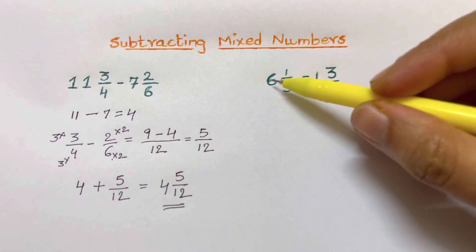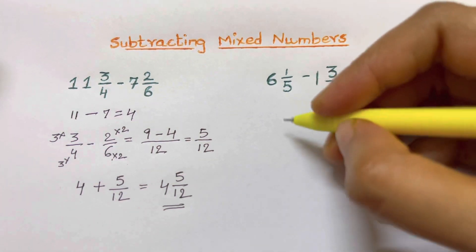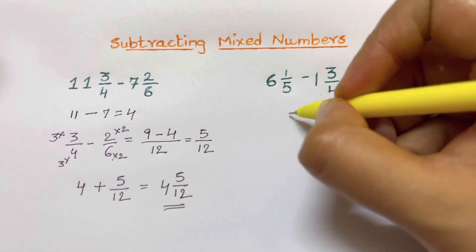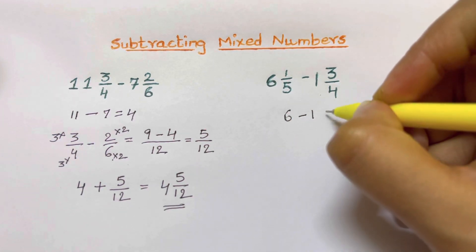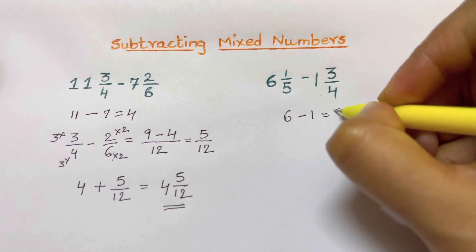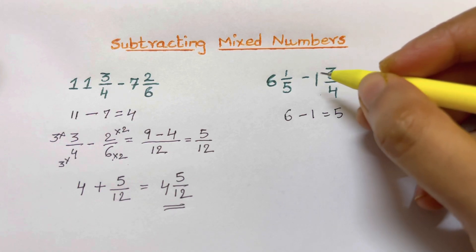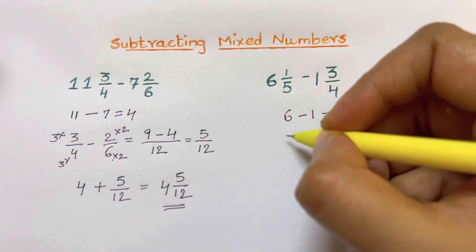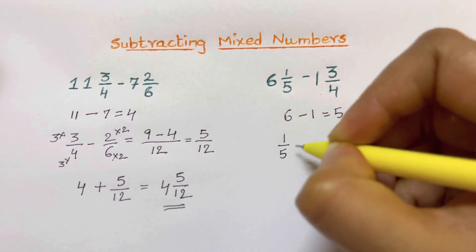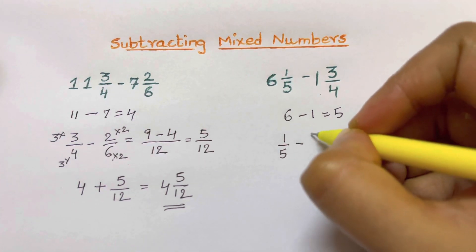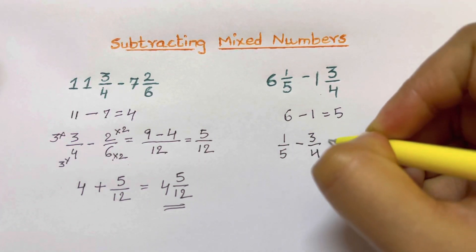Here we subtract the whole numbers first: 6 minus 1 is equal to 5. Now we are going to subtract the fractions, so that's 1 over 5 minus 3 over 4.